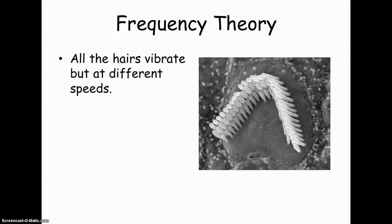Now how does this actually work? Because if you look at either theory alone, it's quite problematic — so we have something called the volley principle. Think of soldiers alternating firing so some can shoot while others reload. This principle says that neural cells alternate firing in a similar fashion. By firing in rapid succession, they can achieve a combined frequency. So we use the place theory at the same time as the frequency theory, and the volley principle is the concept that a combination of the two theories handles the intermediate range.